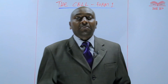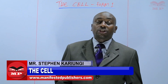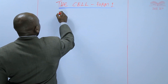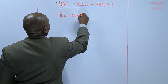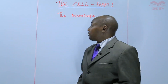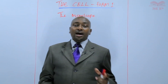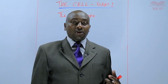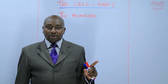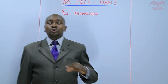Welcome to Manifested Publishers. Welcome learners, my name is Stephen Karyungi. Today we continue with our Form 1 biology and we are discussing the microscope. In order to understand the cell, it is important first to understand the microscope, because cells are microscopic structures which can only be seen with the aid of a microscope. It is important to understand how the microscope looks like, then we can use it to study the cell.